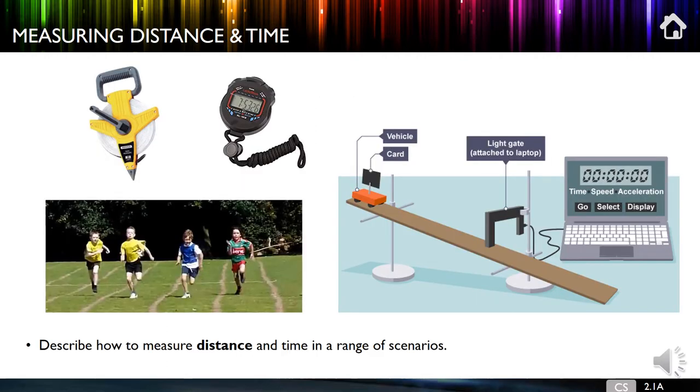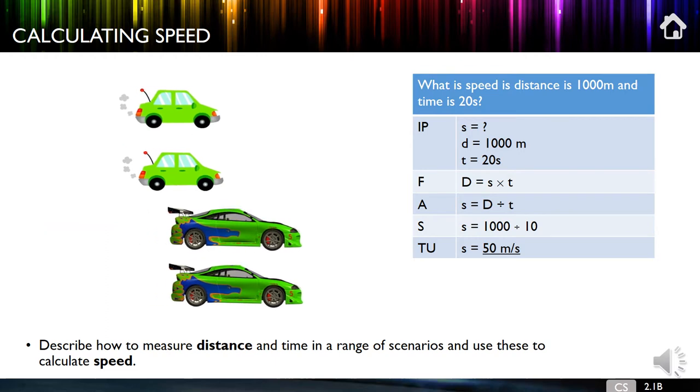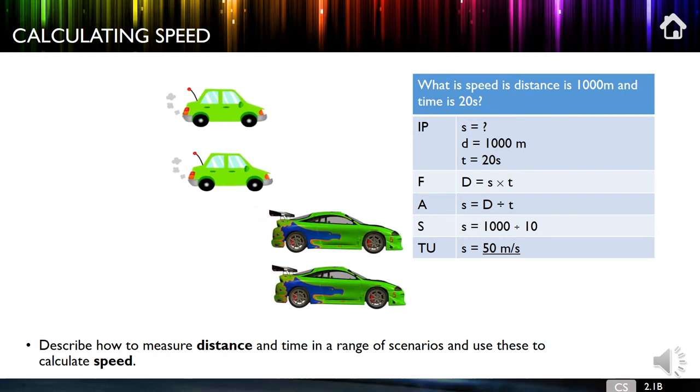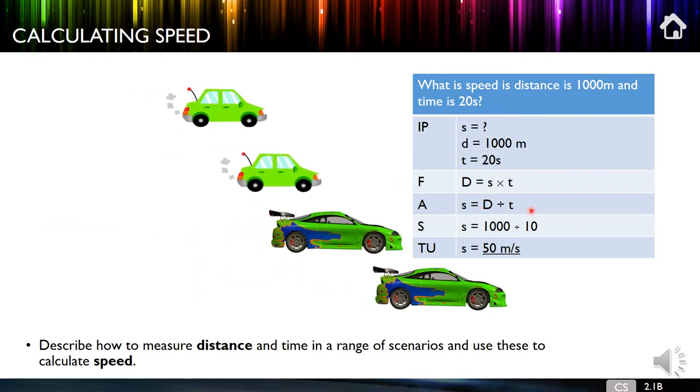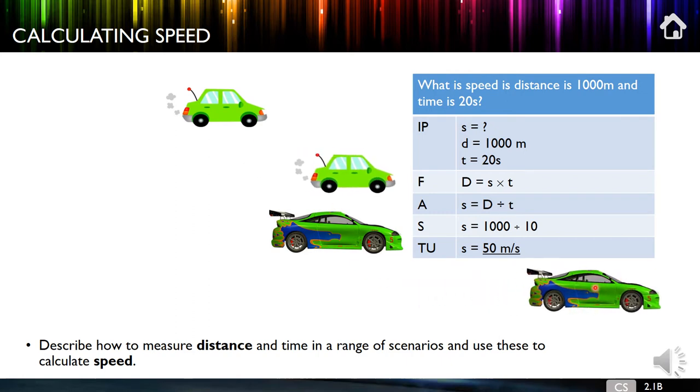So here we are then, we need to be able to record distance, a ruler, a stopwatch, we might do it with some light gates to make it a little bit more precise. So our key idea here is calculating speed. Speed is going to be distance divided by time. So in our little examples here, a fast car traveling for a long time is going to travel a great distance. So if we increase speed, we increase distance. If we increase time, we increase distance as well.